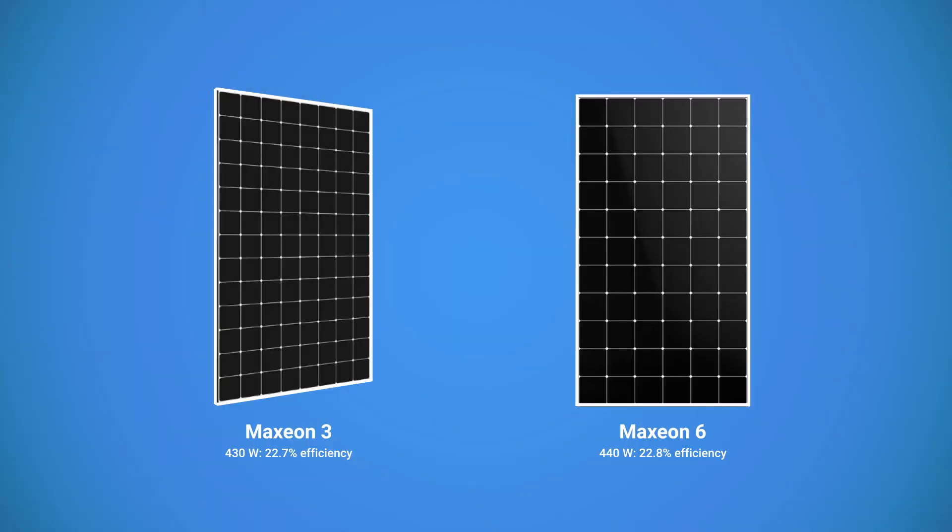To be exact, Maxeon 3 430-watt panel is at 22.7% efficiency, and Maxeon 6 440-watt is at 22.8%. What this means is that these SunPower panels produce the most power for the amount of space that they occupy. The efficiency by itself is not the most important thing—it really matters only in situations where you have very little space for your panels. But the fact that it's so high means that SunPower puts out the most modern product on the market.